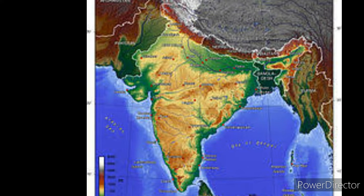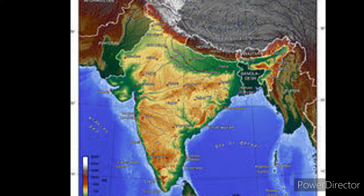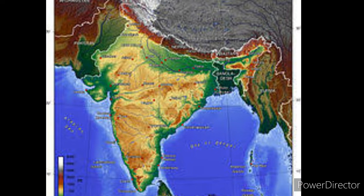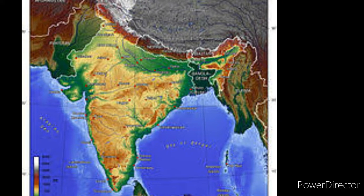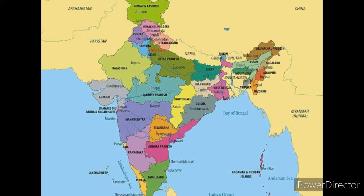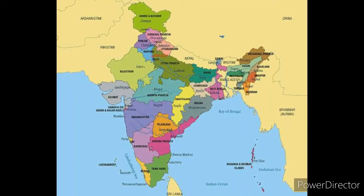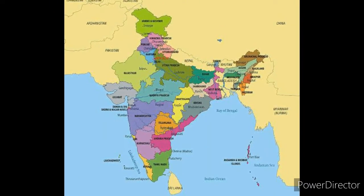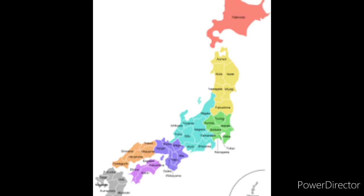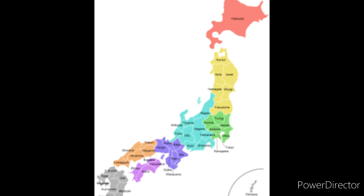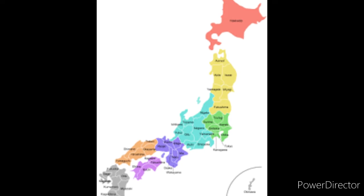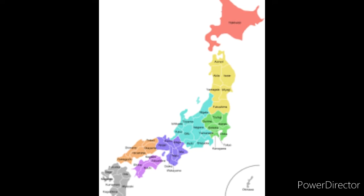India total surface area is 3,287,263 km². Land area is 2,973,193 km². Water area is 314,070 km². Japan total surface area is 377,915 km². Land area is 364,485 km². Water area is 13,430 km².